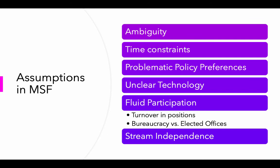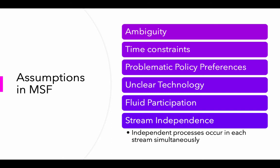And then stream independence. One of the things that is so conceptually interesting — but also somewhat difficult when you first start thinking about MSF — is that independent processes or streams occur at every given point in time. Meaning the politics can change without changing anything in the problem stream at all, and the policy stream can change without the problem changing. This might make sense when you think about why policy solutions haven't kept up with the underlying problem, or why politics haven't kept up with potential policy solutions. When you're seeing this for the first time, it's really important to understand that these streams act independently in this theory.